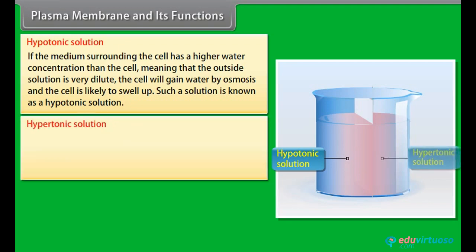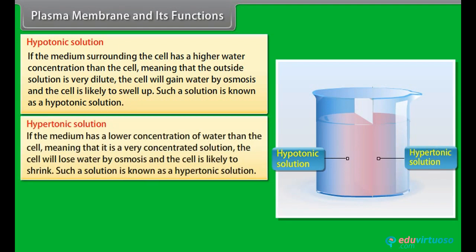Hypertonic solution: If the medium has a lower concentration of water than the cell, meaning that it is a very concentrated solution, the cell will lose water by osmosis and is likely to shrink. Such a solution is known as a hypertonic solution.